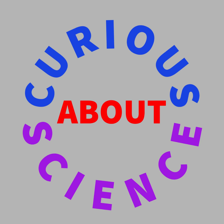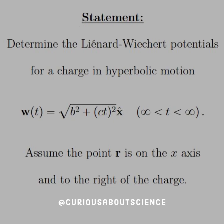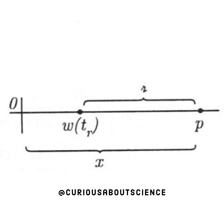Okay, so now that we've seen this hyperbolic motion, we want to know some more stuff about it, particularly determine the Liénard-Wiechert potentials for a charge in hyperbolic motion. We saw the motion last time. Again, my copy and paste forgot the negative on the infinity to the left of T. But we want to assume the point R is on the x-axis and to the right of the charge.